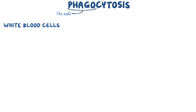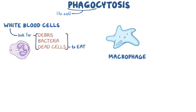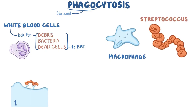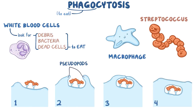Phagocytosis, where phago means to eat, is used by white blood cells like macrophages and neutrophils, which patrol the body looking for debris, bacteria, and dead cells to eat. Let's imagine that a macrophage comes across a particularly bothersome streptococcus. First, the strep attaches to macrophage receptors on its cell surface. The macrophage then extends arm-like projections called pseudopods around the strep, like a death hug. The strep is slowly engulfed by the cell membrane, which invaginates to form a vesicle on its inner side. The vesicle then separates from the cell membrane, forming a phagosome.